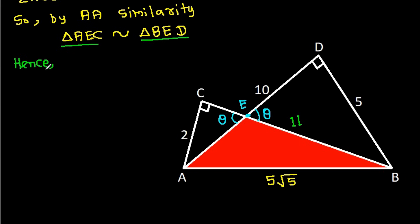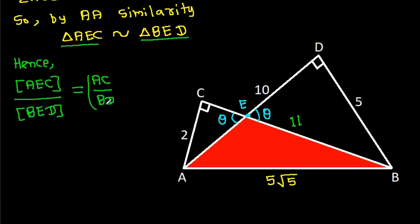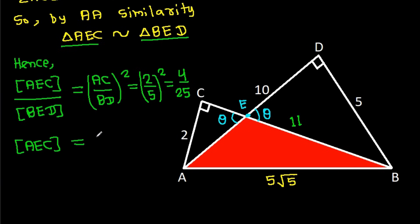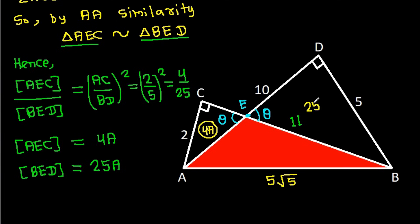Since these two triangles are similar, the ratio of area of triangle AEC to area of triangle BED equals (AC/BD) squared, which is (2/5) squared. That means if the area of triangle AEC is 4a, then the area of triangle BED is 25a.